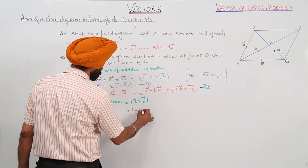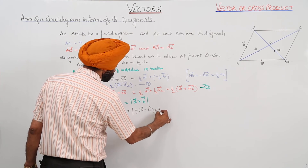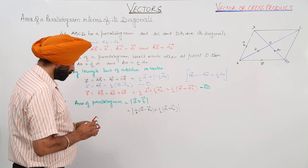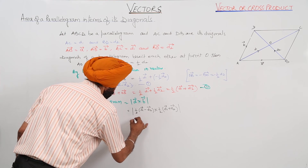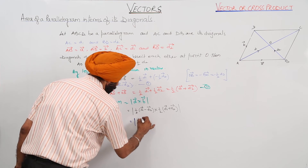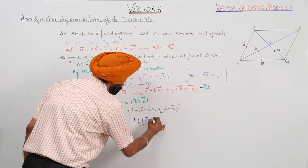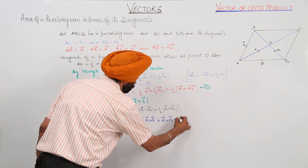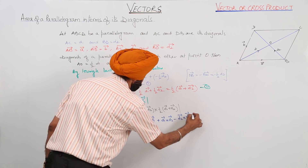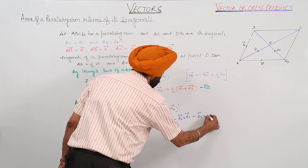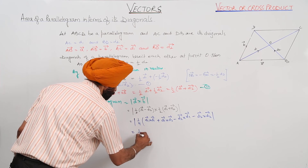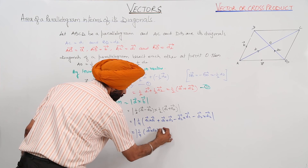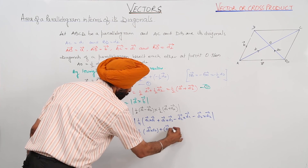The area of the parallelogram equals vector a cross vector b, which equals half of vector D1 minus vector D2 cross product with half of vector D1 plus vector D2. Expanding: one-quarter times the quantity vector D1 cross D1 plus vector D1 cross D2 minus vector D2 cross D1 minus vector D2 cross D2.